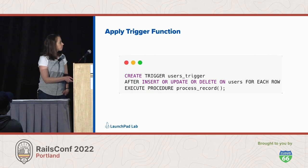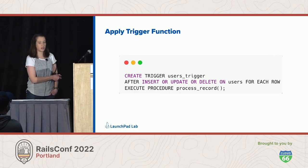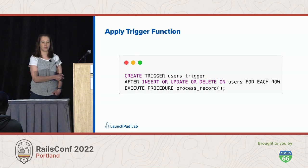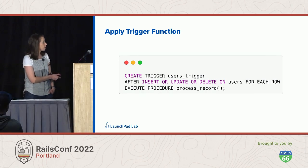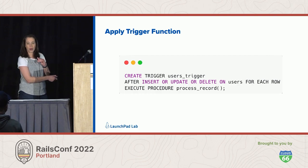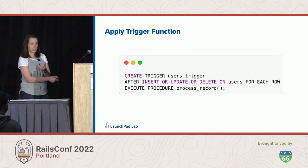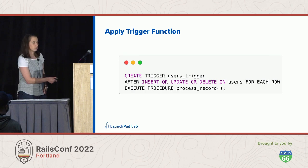Now for the actual trigger itself. To apply the trigger, you have the CREATE TRIGGER keyword, give the trigger a name — perhaps more specific to the table. The function can be applied to as many triggers as you want. You tell it the function you want to execute, when you want this trigger to fire, what table you want it to fire on, and then FOR EACH ROW. There's also FOR EACH STATEMENT, which executes once for the whole table. Since I'm interested in individual records when they change, I chose FOR EACH ROW.